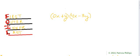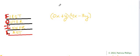Hello and welcome back. Today we're working with binomials and we're multiplying two binomials using the FOIL method.